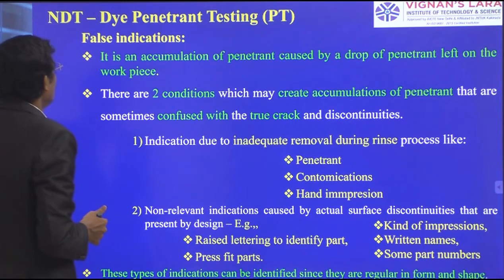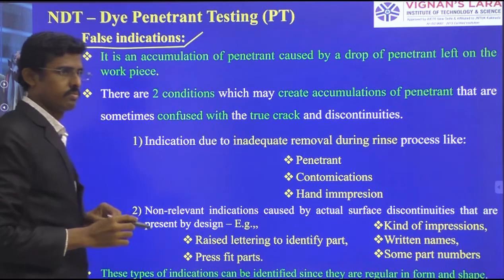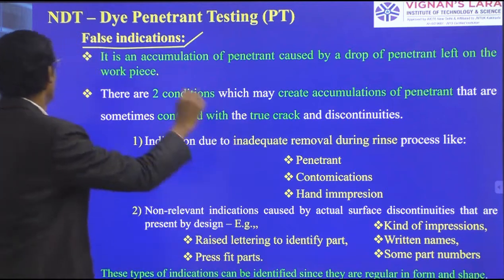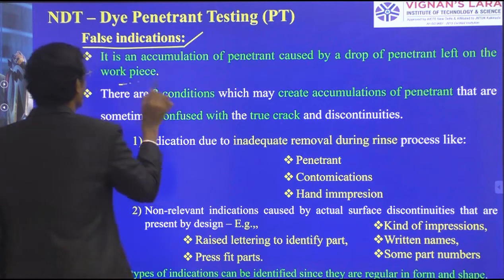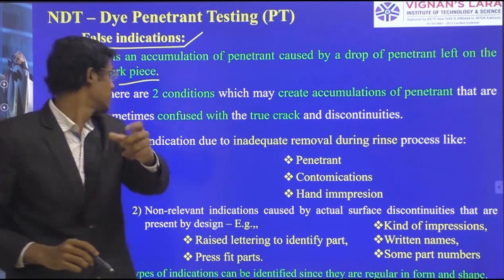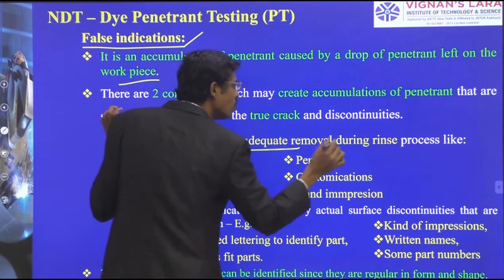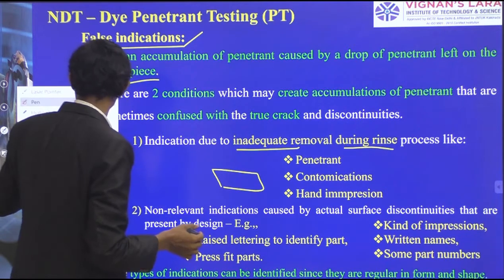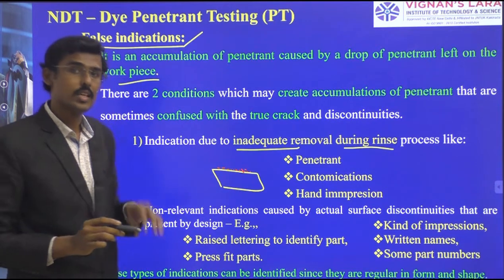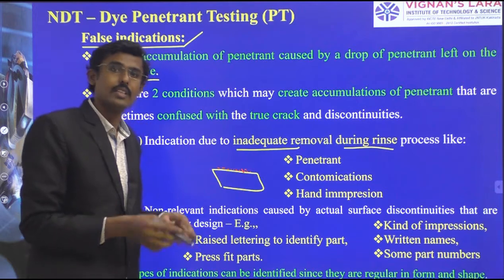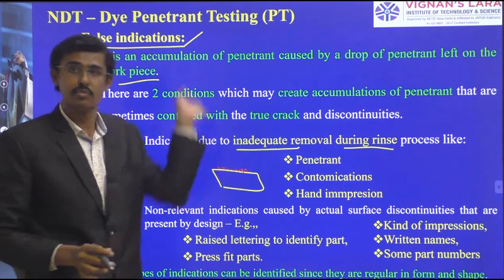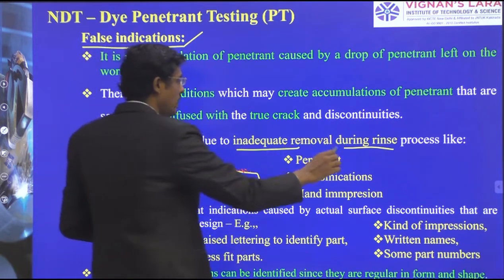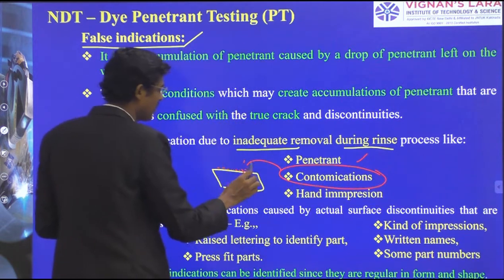There is a chance of false detection. The surface may be identified as a crack but there is no crack — false detection chances exist. It is an accumulation of penetrant caused by a drop of penetrant left on the piece. Two conditions lead to false indications. Number one: indication due to inadequate removal during the rinse process. We apply a water-soluble or solvent-soluble penetrant, but some remains fixed on the surface. If we do a second inspection on that surface, those indications reflect and we identify it as a crack. Maybe it is contamination because it was not cleaned properly.